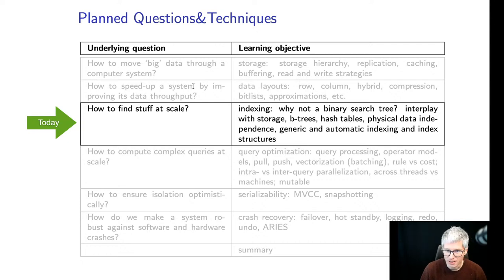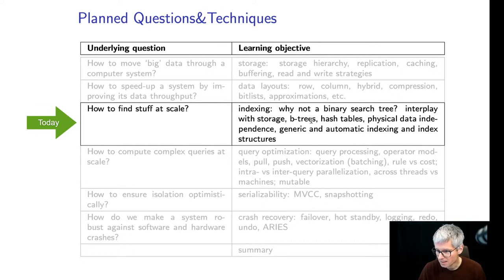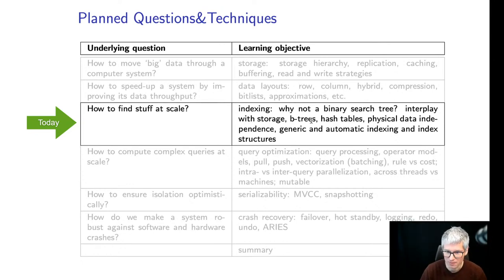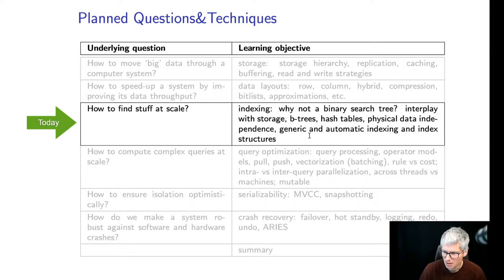I will cover topics like why not use a binary search tree, the interplay with storage, B-trees, and not so much hash tables. I assume you heard about hash tables in an undergrad lecture, so I won't be covering that. We'll also talk about physical data independence, and if time allows, next week I'll discuss ongoing fancy ideas in the space of indexing.